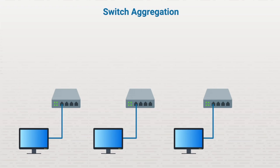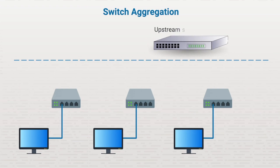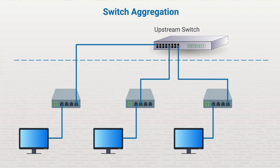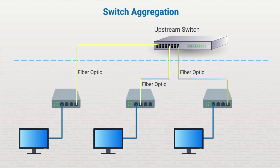Depending on the number of connections you have, you could deploy multiple switches. These switches are then connected to an upstream switch that's usually faster and more efficient. Often, the connections between the upstream switch and access switches are fiber optic, which doesn't have the same distance limitations as a twisted pair of Ethernet cables. Fiber optic connections are also much faster than twisted pair Ethernet connections.